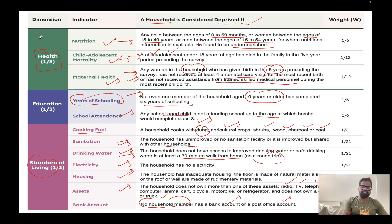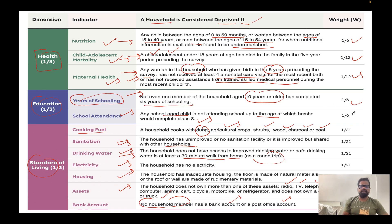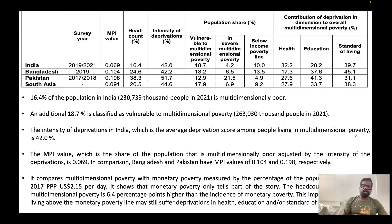Regarding the weighting of indicators: since health is one-third of the index, nutrition is given a weight of one-sixth, and child/adolescent mortality and maternal health are each given one-twelfth. Education is also one-third, so years of schooling and school attendance are each one-sixth. Standard of living is one-third with seven indicators, so each indicator is given a weight of one-twenty-first.